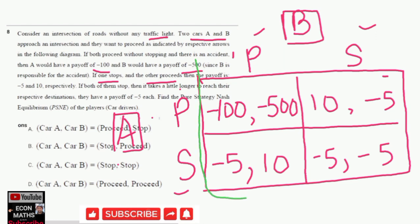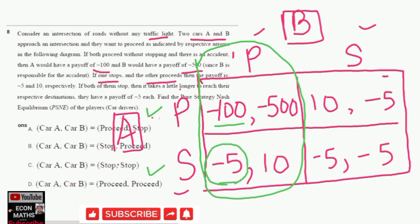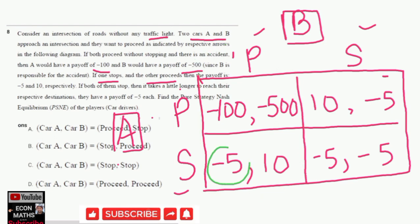Looking at the first column — if Car B chooses to proceed — Car A has two options: either to proceed or to stop. If Car A proceeds, its expected payoff is minus 100; if it stops, its expected payoff is minus 5. Since minus 5 is greater than minus 100, Car A would choose to stop when Car B has chosen to proceed.